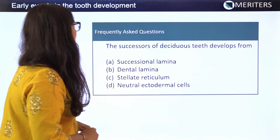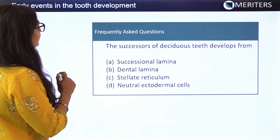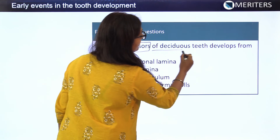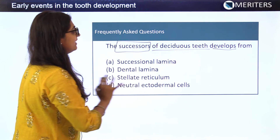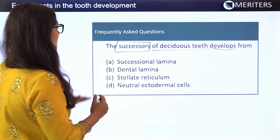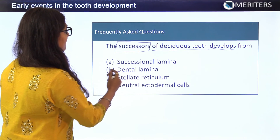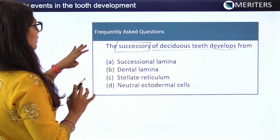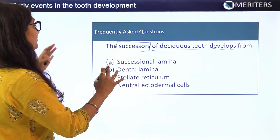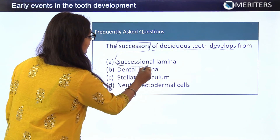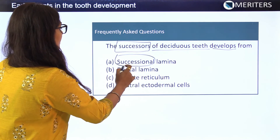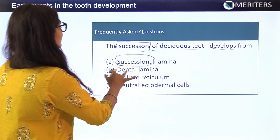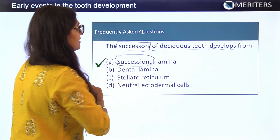The third frequently asked question: The successors of the deciduous teeth develop from which kind of lamina — successional lamina, dental lamina, stellate reticulum, or neural ectodermal cells? From the options, it is clear that the successional lamina — the other name for the lingual extension of the dental lamina — is the tissue that gives rise to the successors of the deciduous teeth. The correct answer is successional lamina.